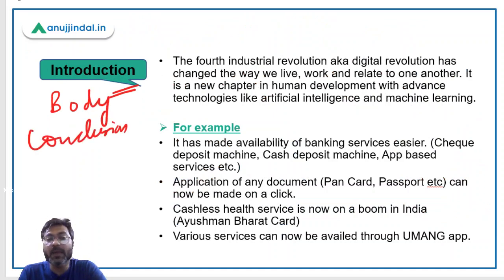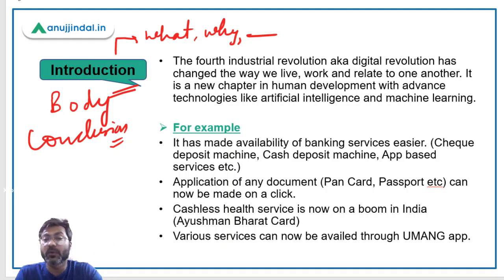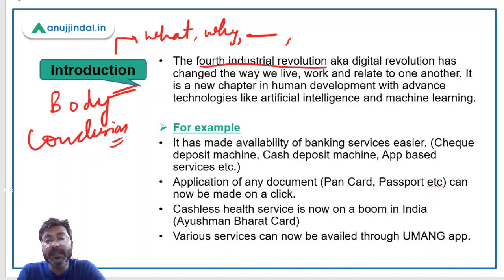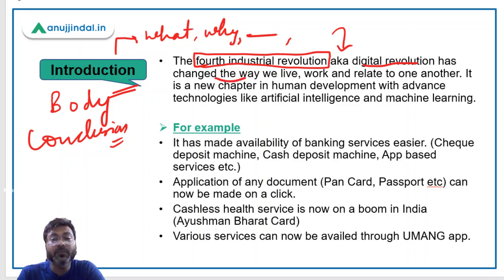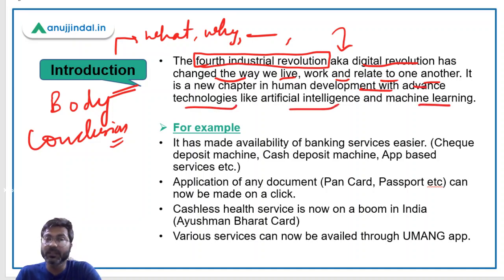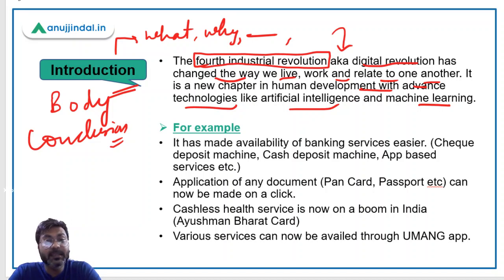When writing the introduction, you have to write about the definition of any particular act, policy, or program given in the question — here the fourth industrial revolution. So you can start the introduction like this: 'The fourth industrial revolution, aka the digital revolution, has changed the way we live, we work, and we relate to one another. It is a new chapter in human development with advanced technologies like artificial intelligence and machine learning.'